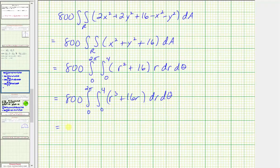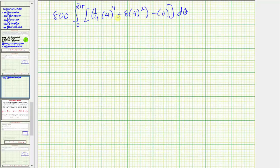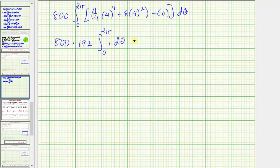Now we integrate with respect to R. We have 800 times the integral from 0 to 2 pi of one-fourth R to the fourth plus 8 R squared. When R is 4, we have one-fourth times 4 to the fourth plus 8 times 4 squared. When R is 0, both terms are 0. This simplifies to 192, so we have 800 times 192 times the integral from 0 to 2 pi d theta, and this product is equal to 153,600.